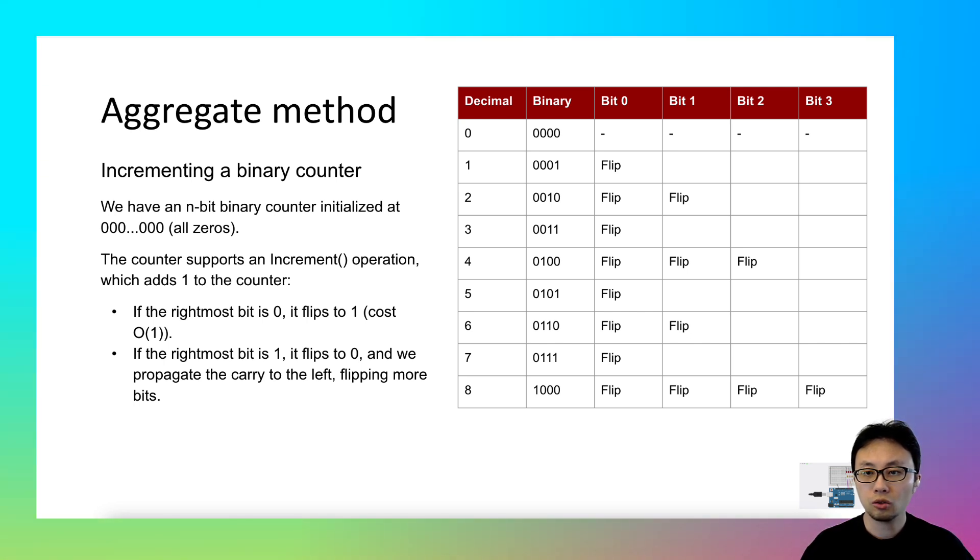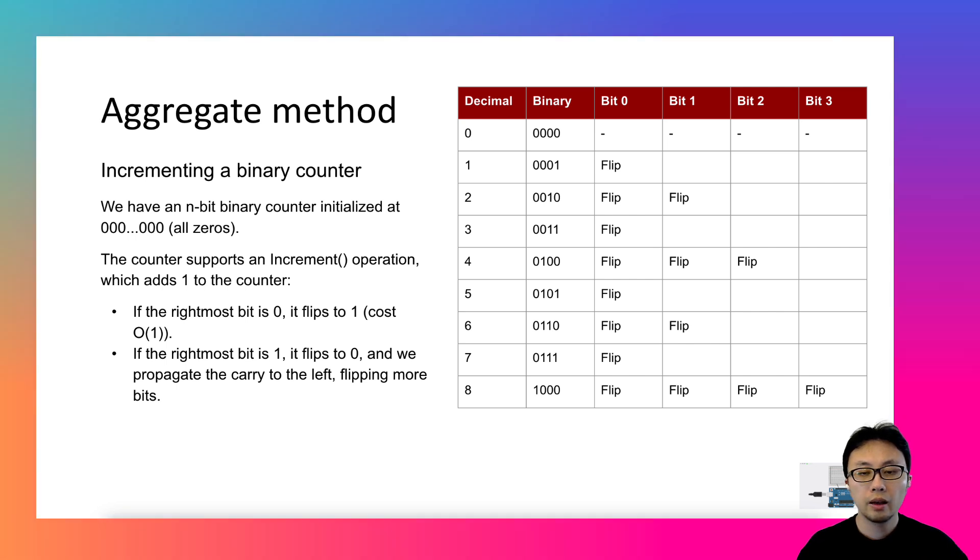the increment operation takes 2 steps, because it flips 2 bits. If you have a sequence of increment operations being executed, what's the average case time complexity per operation?